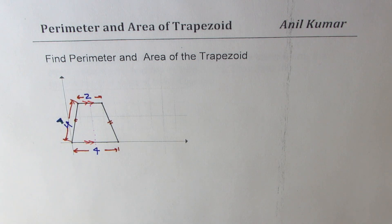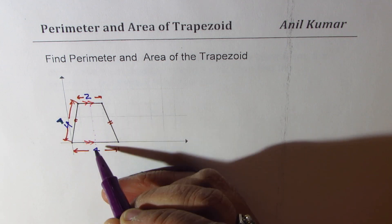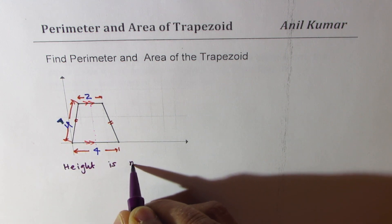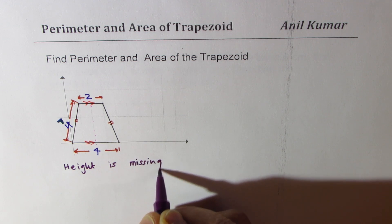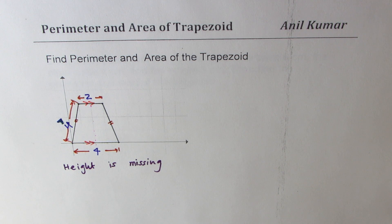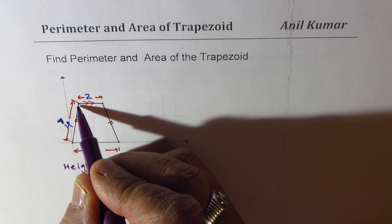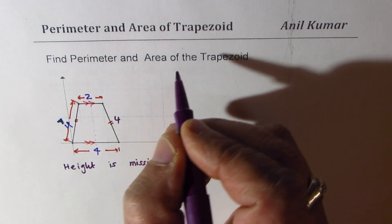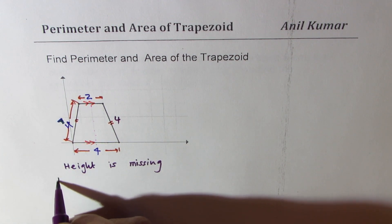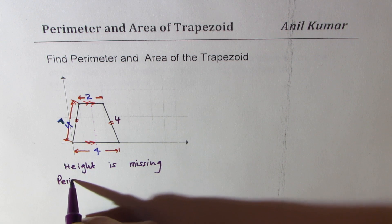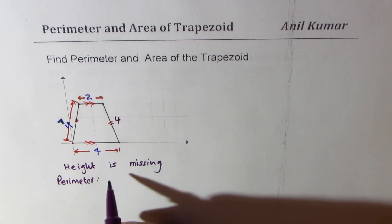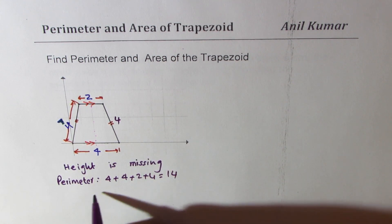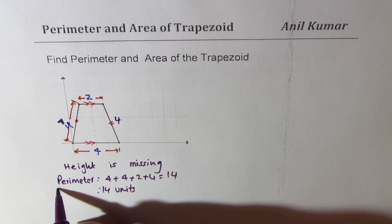In the next example, I made a small change — this time we do not know the height, so the height is missing. You need to find the area and perimeter of the trapezoid. We are given the length of the slanted sides, and these two sides are equal, each being 4 units. Since the height is missing, we'll find the perimeter first. Perimeter is straightforward: 4 plus 4 plus 2 plus 4, which is 14 units.